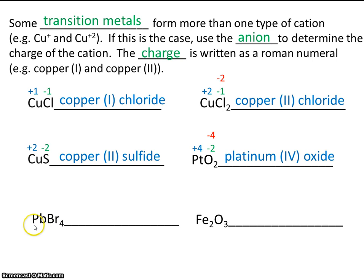Here's lead and bromine. Well, lead is, of course, a transition metal because it's found in the middle of your periodic table. Bromide always has a charge of minus 1, and we have 4 bromides, so that's a total of minus 4. So lead has to be plus 4. So the name of this is lead (IV) bromide.